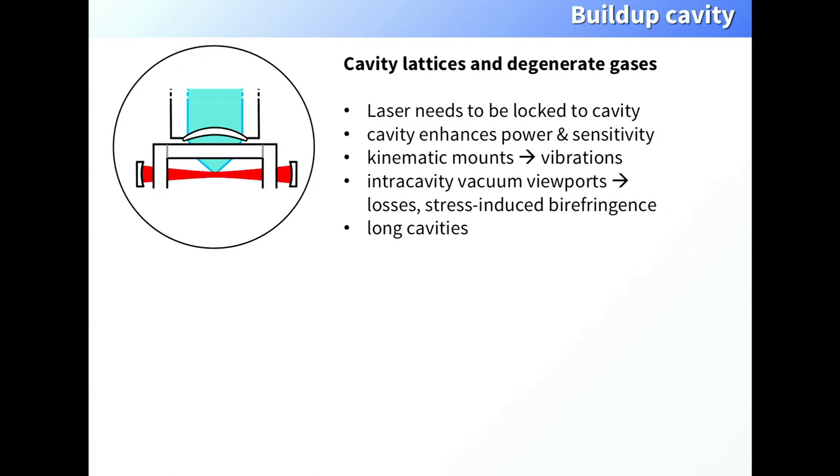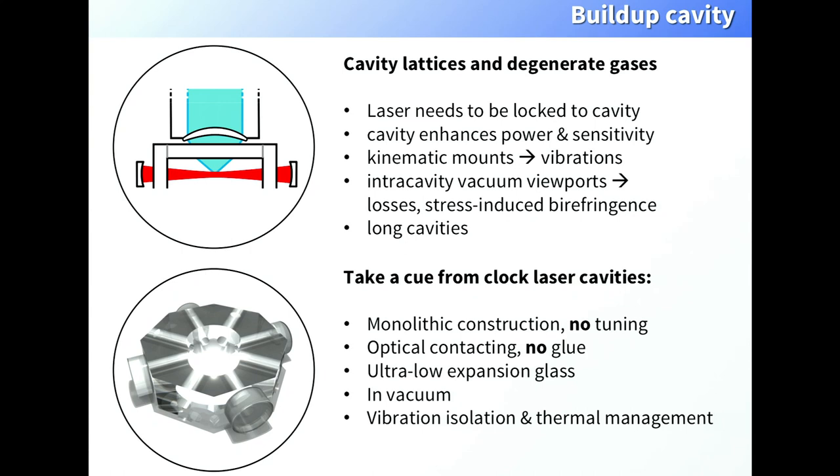People have tried this, and it tends to not work so well. It works, but not particularly great. My idea, or what I would like to sell you, is that we can take a cue from how we construct laser cavities for these very good reference lasers for optical clocks. Here's a sketch. You see this glass body with four mirrors optically contacted to it. In this construction, it's completely monolithic. There's no tuning. That's bad, so you can't really align anything. You also have to actually optically bond these glass pieces together, so this really becomes a single glass body. You can't glue it. If you use ultra-low expansion glass materials like in these reference cavities, then this can be quite good. You should put that in vacuum and really worry about vibration isolation and thermal management. That's the technical stuff.